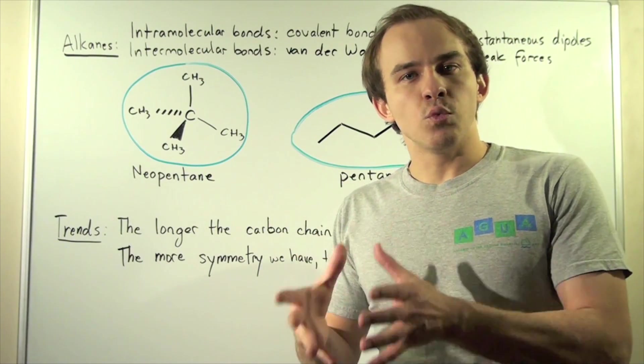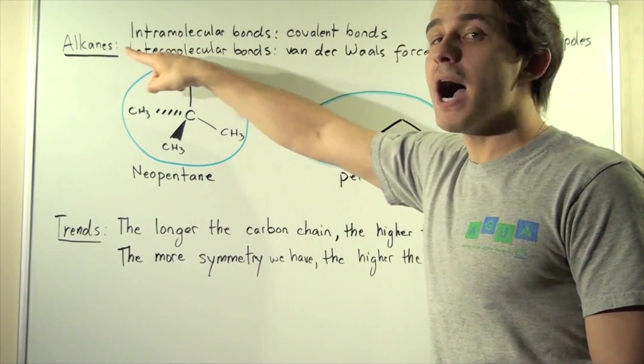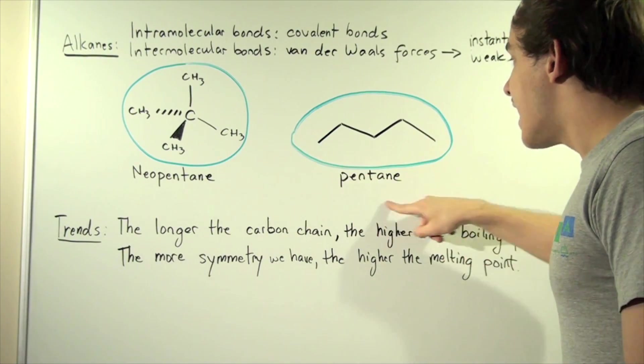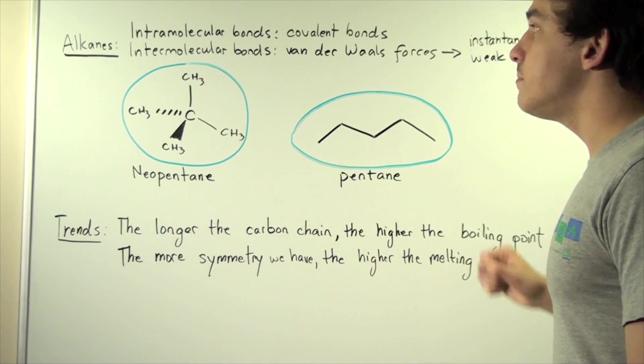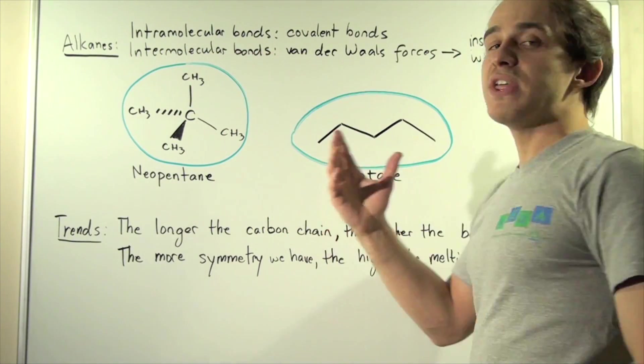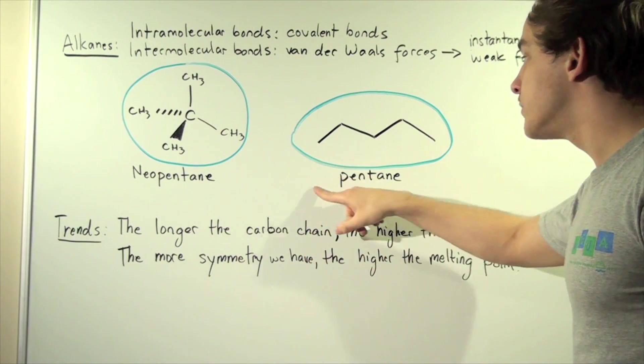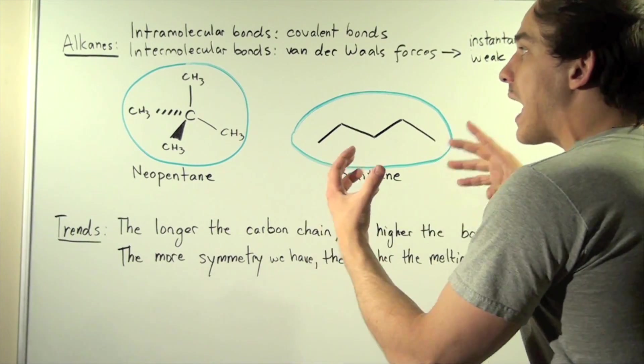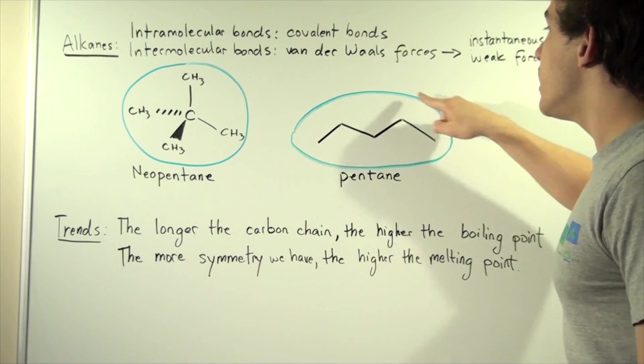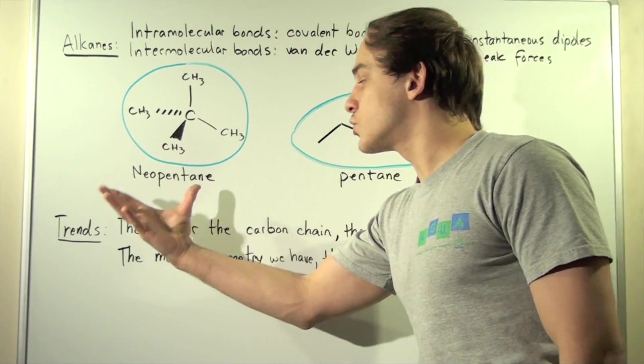And that means whenever we go from liquid to gas, we're breaking intermolecular bonds. So that means if this has a higher boiling point, that means this forms stronger intermolecular bonds. And that's exactly why. The longer our carbon chain is, the stronger our intermolecular bonds are. Because we have more surface area, we have more van der Waals forces than in this symmetrical case.